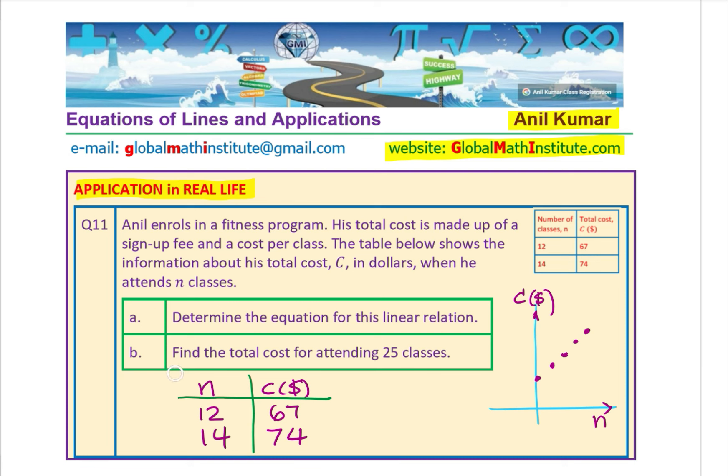Now let's take up the solution. We are trying to relate two things: number of classes with the cost. You can think about these as coordinate points on a graph. When the number of classes is 12, $67 is being paid, and if the number of classes is 14, then $74 is being paid. You are given two points on the line. You can find the slope and then write down the equation in the form y equals mx plus b.